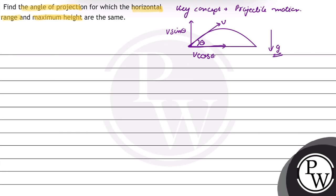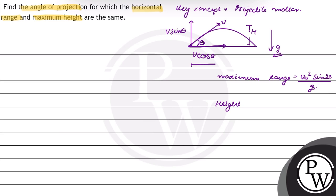The particle moves a maximum horizontal distance given by the range. The formula for range is: R = V₀² sin(2θ) / g, where V₀ is the initial velocity and theta is the angle with the horizontal. And the maximum height attained is given by: H = V₀² sin²(θ) / 2g.